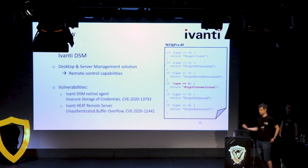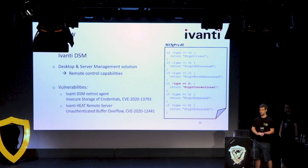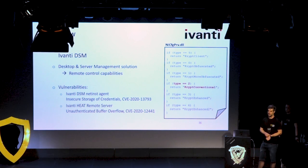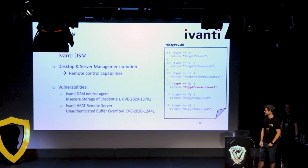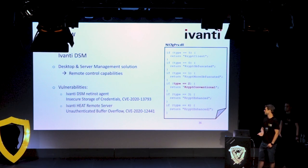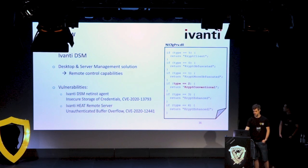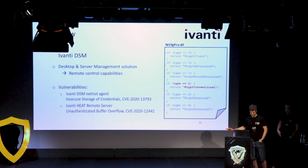If a malicious user or attacker gets access to a workstation running this agent — without even being an administrator — they can read that file, extract those credentials, and do lateral movement throughout the entire Active Directory. We also found an unauthenticated buffer overflow on the agent, which exposes network ports and could potentially allow code execution on the system. That's it for Ivanti — we want to spend more time on the next solution.